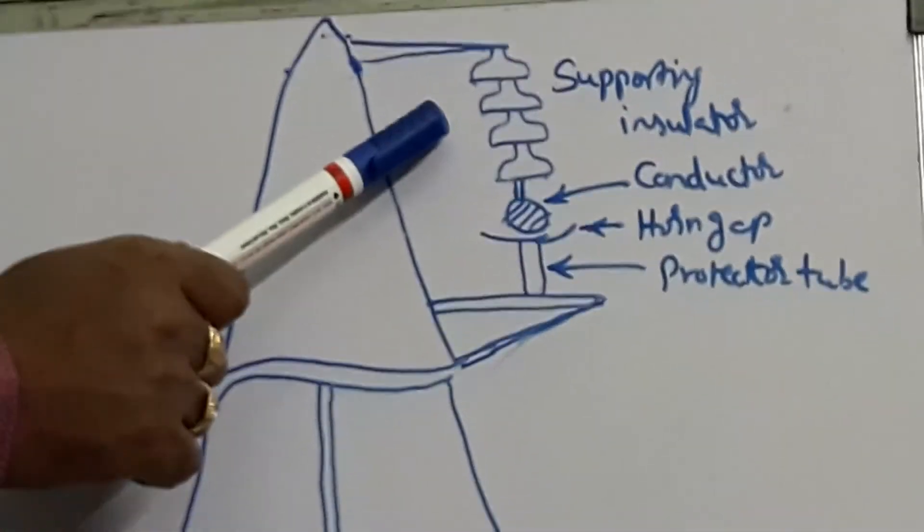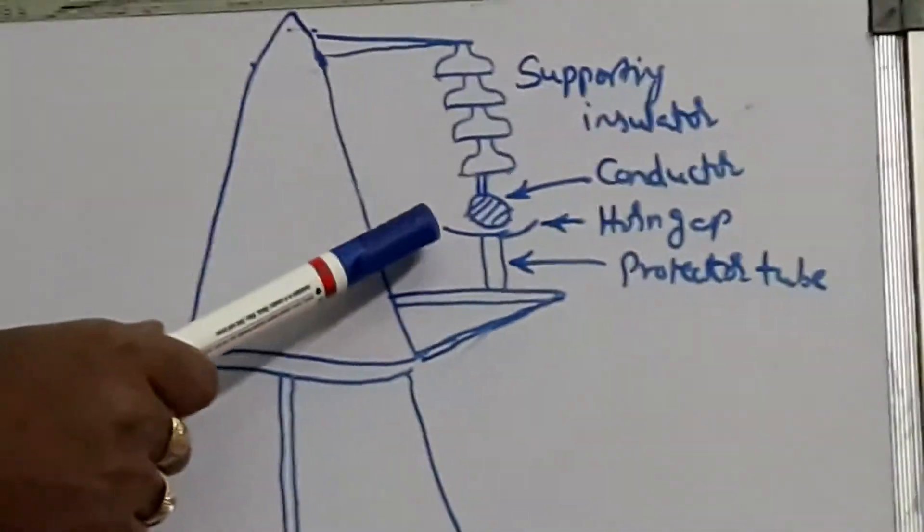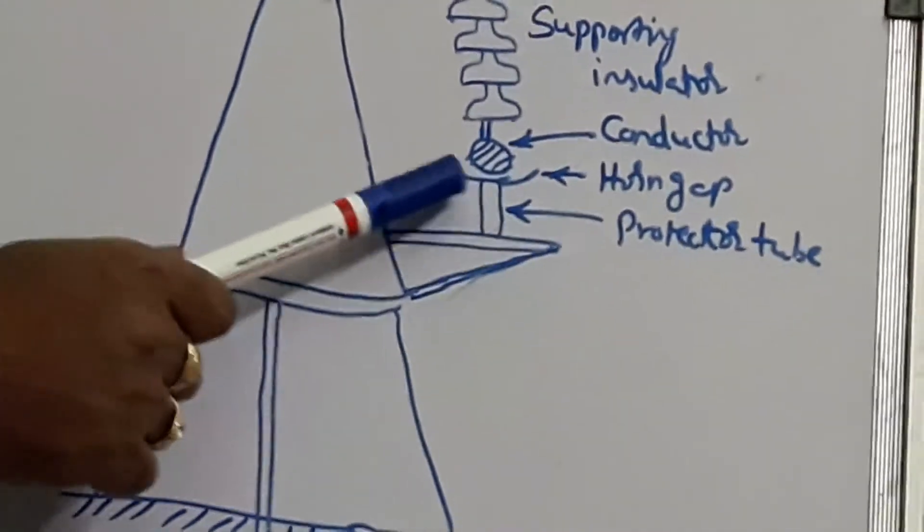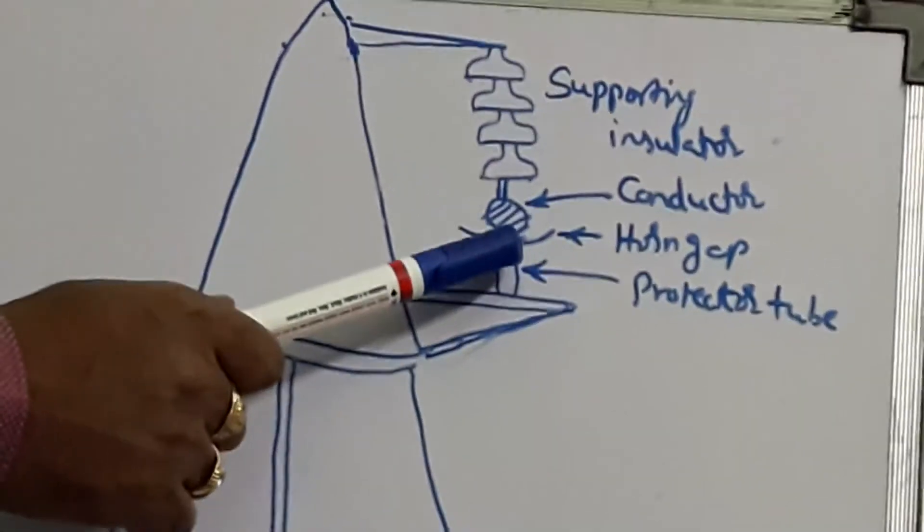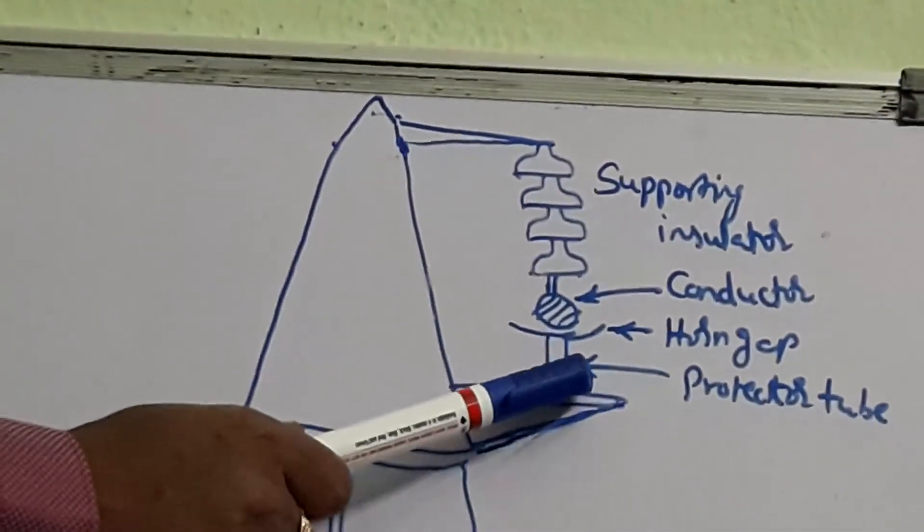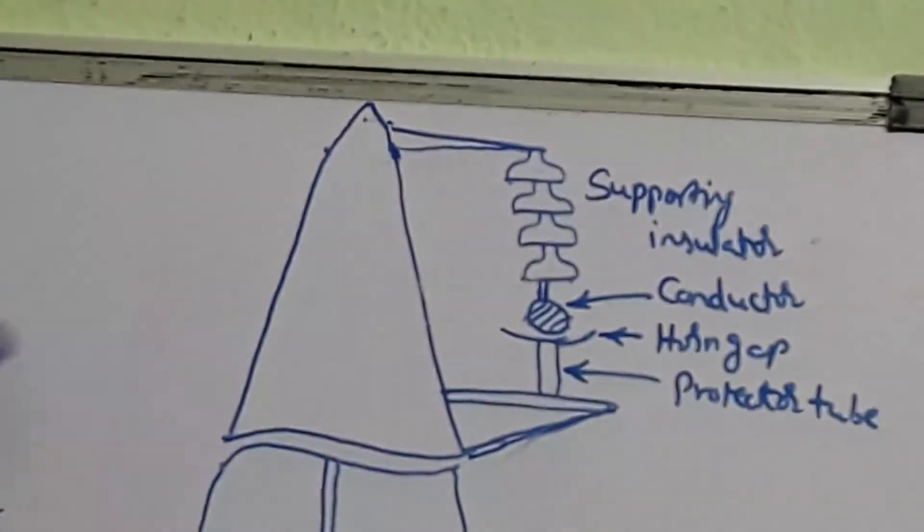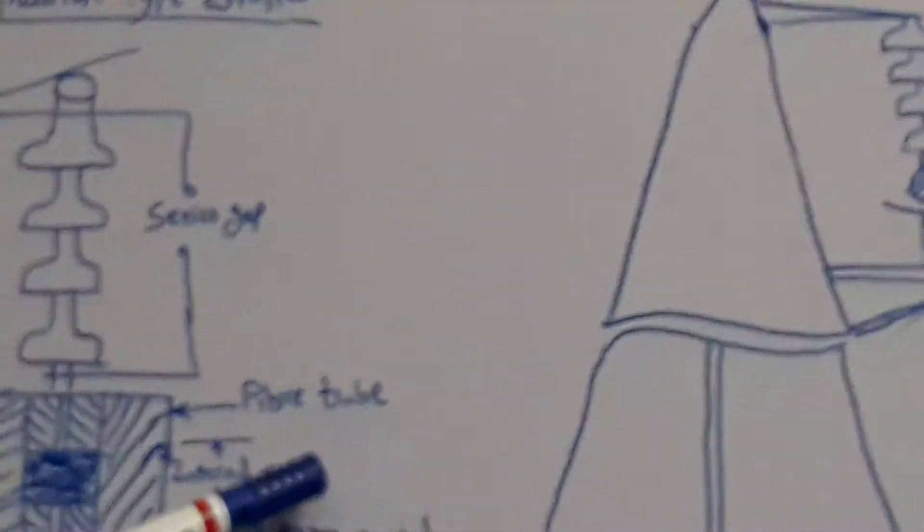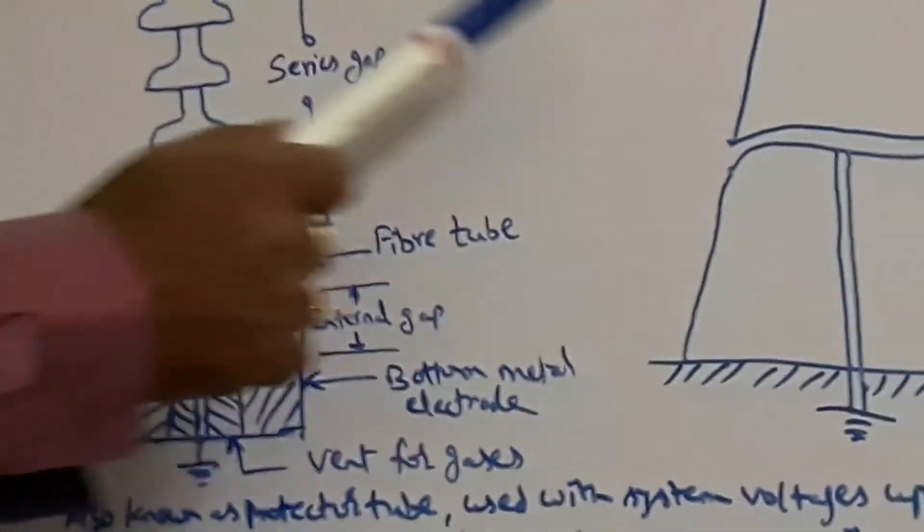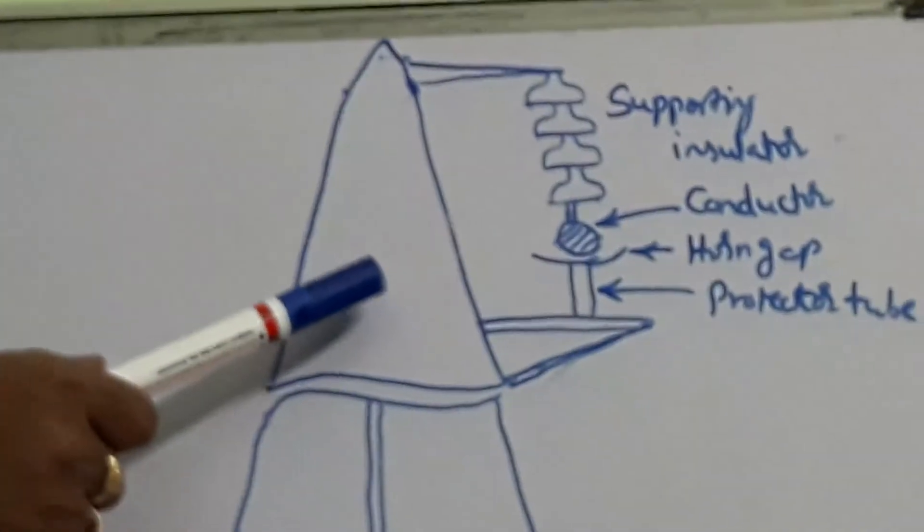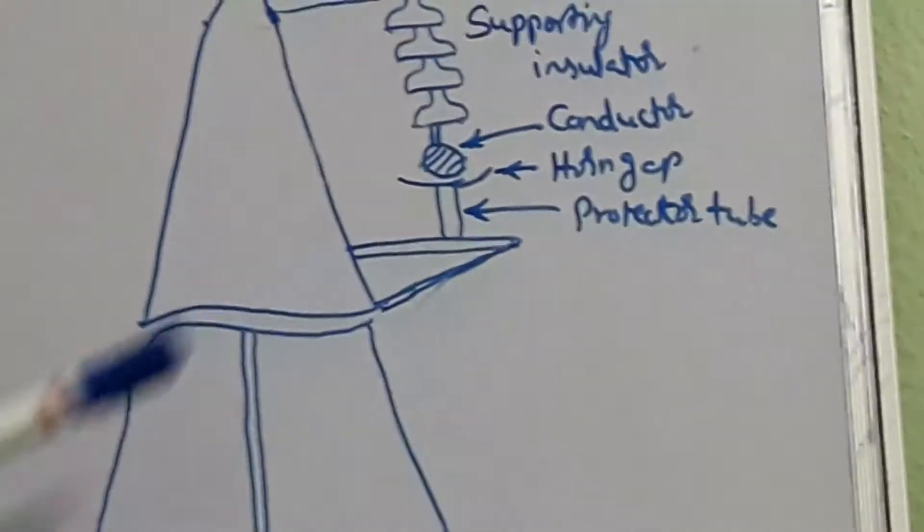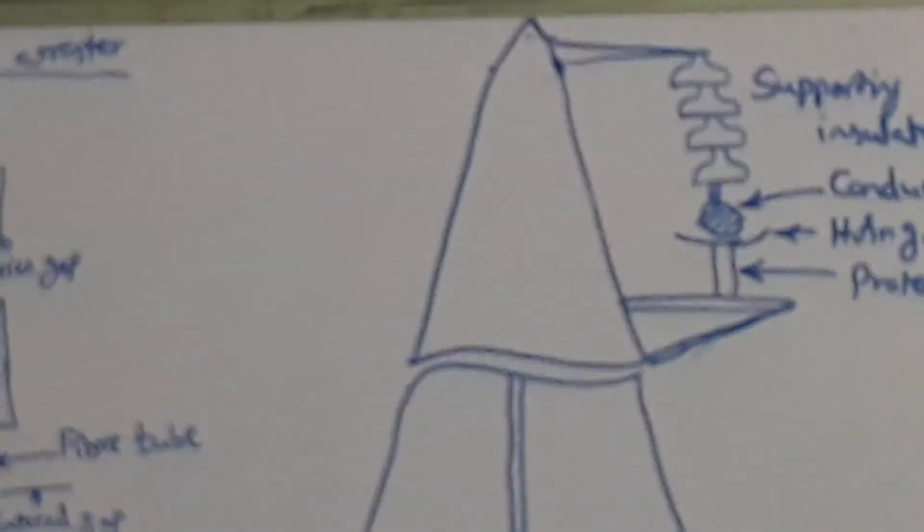The supporting insulator and cross arms are between the conductors, and a horn gap is provided between the conductors. The distance of the horn gap is so small that it is in series with the protector tube. The protector tube is highlighted here along with the string of insulators shown with the support of the tower and the cross arms.